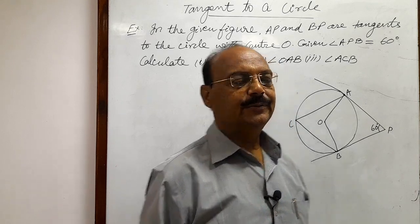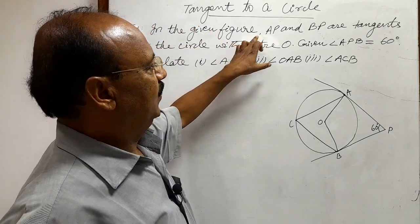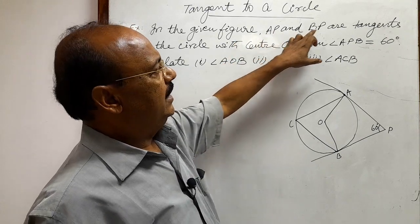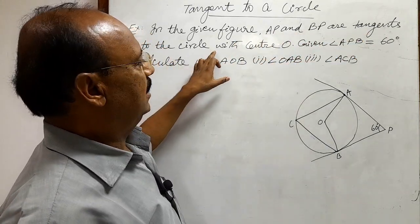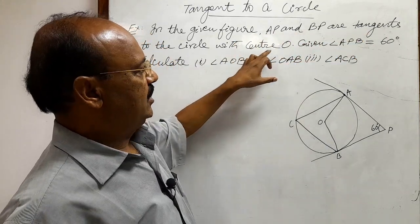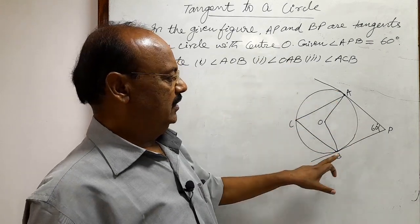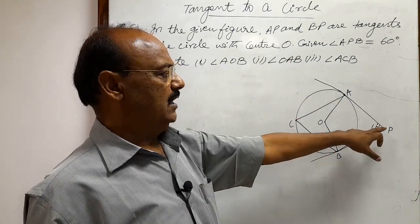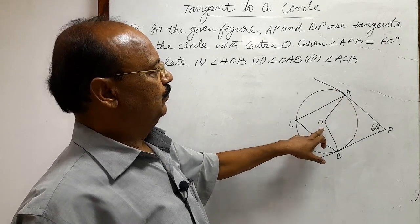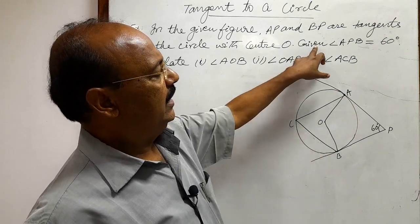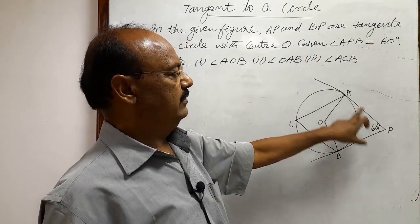Here the question is: in the given figure, AP and BP are tangents to the circle with center O. Given angle APB is 60 degrees.